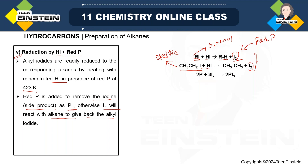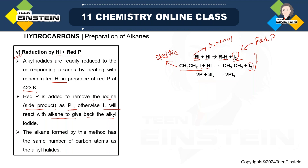Two moles of phosphorus are required to remove three moles of iodine molecule. The alkane formed by this method has the same number of carbon atoms as the alkyl halide. In some methods, such as Wurtz, two alkyl halides connect and the carbon count doubles. But here, the carbon number remains the same — if you start with two carbons, you get two carbons.